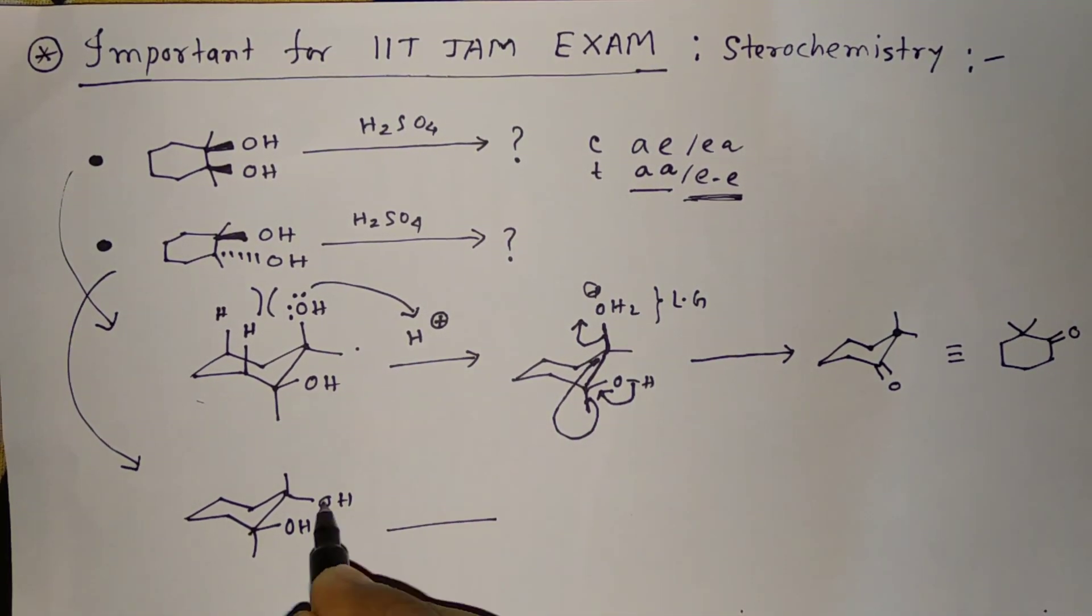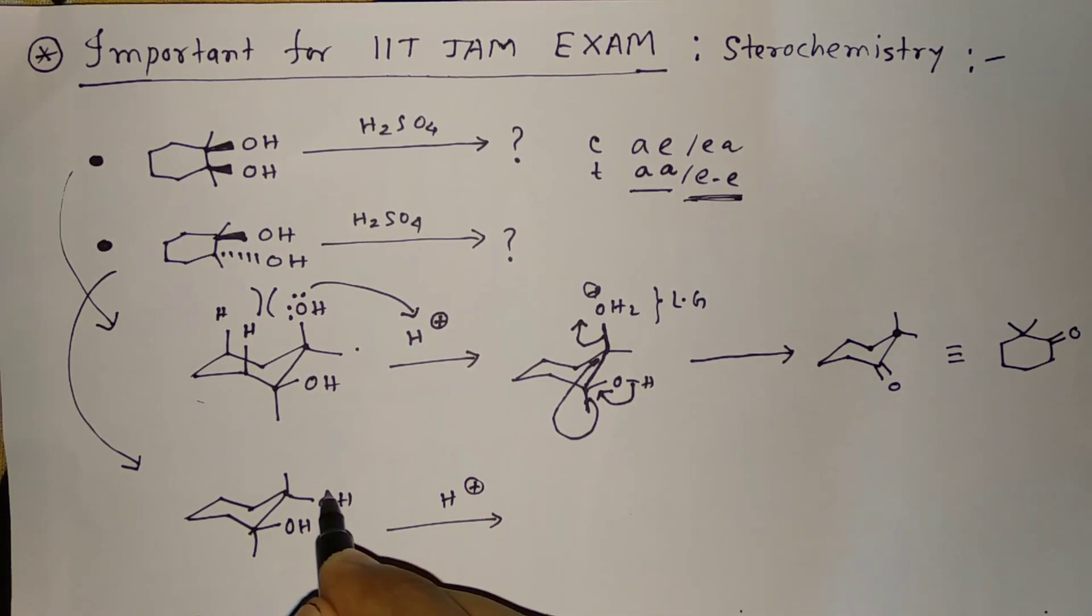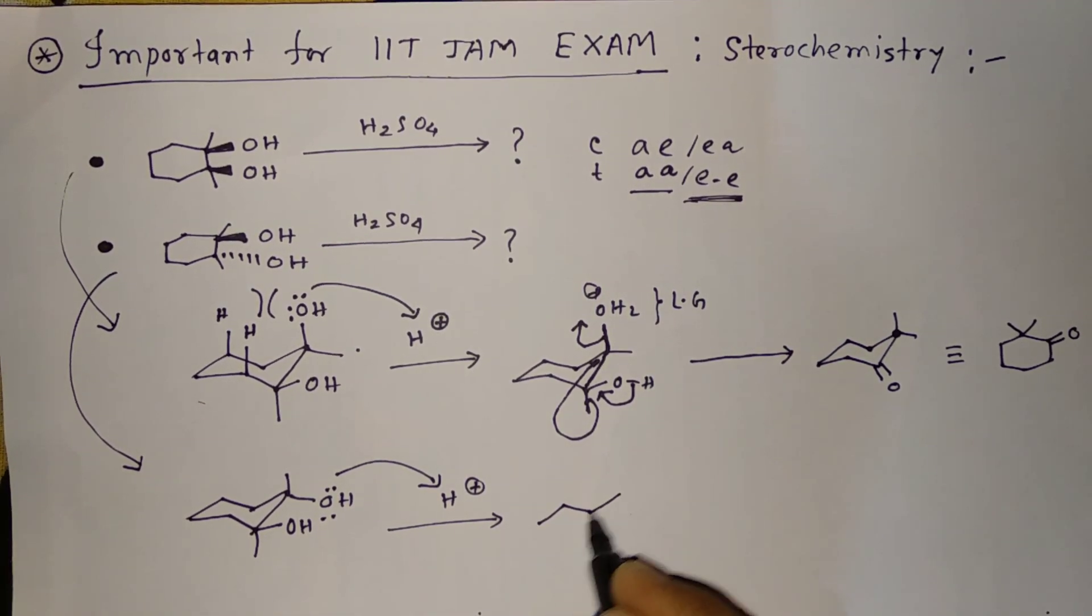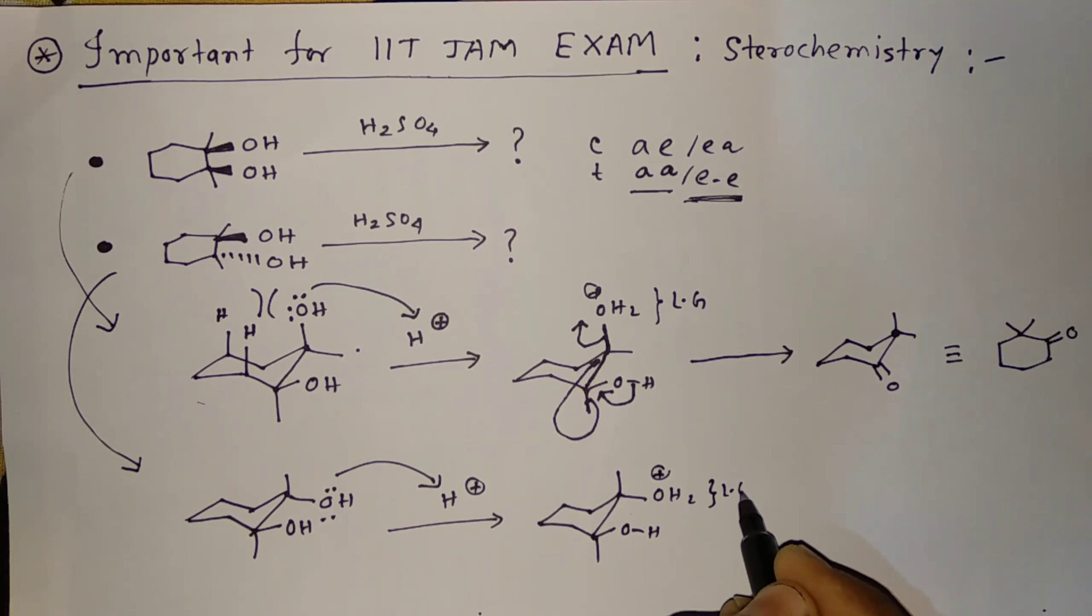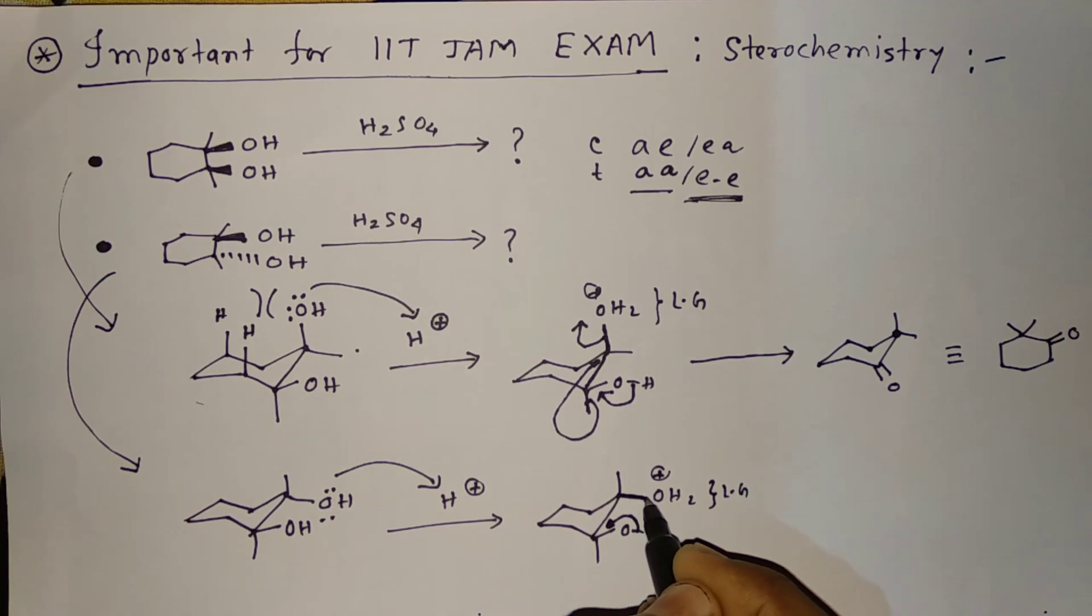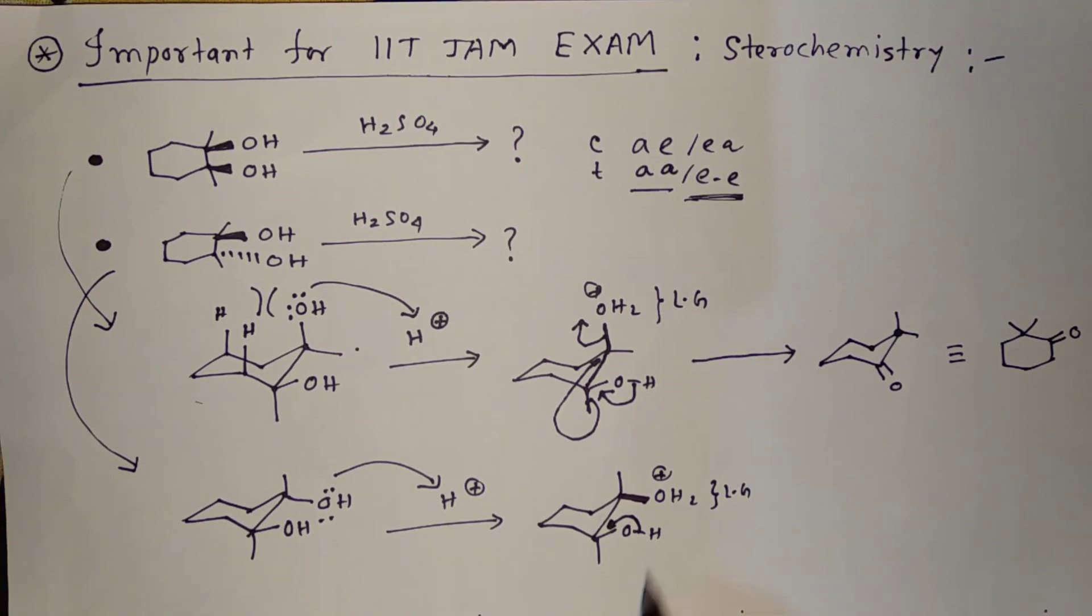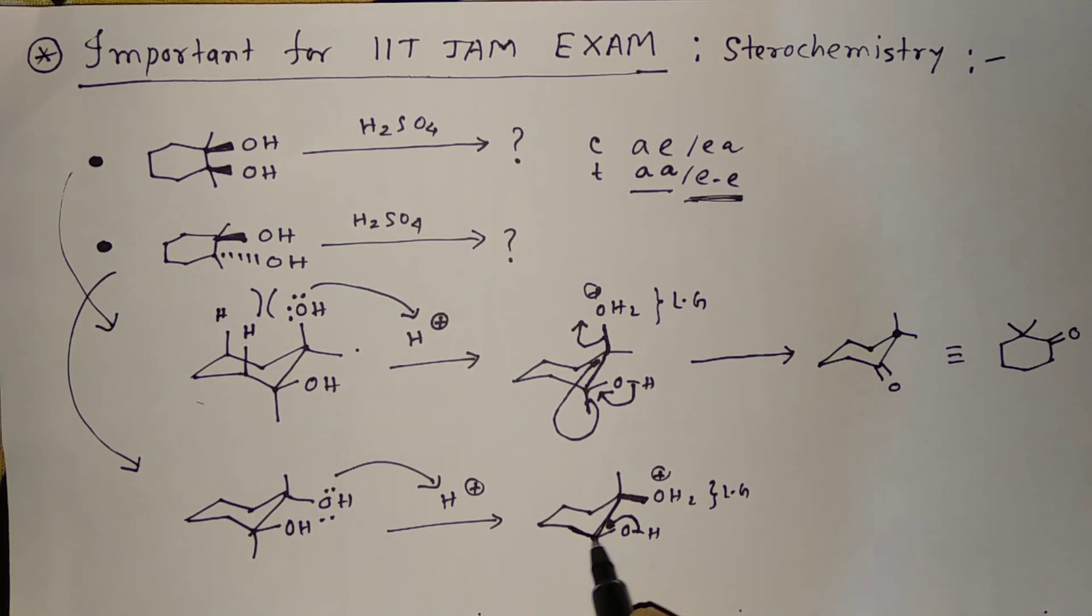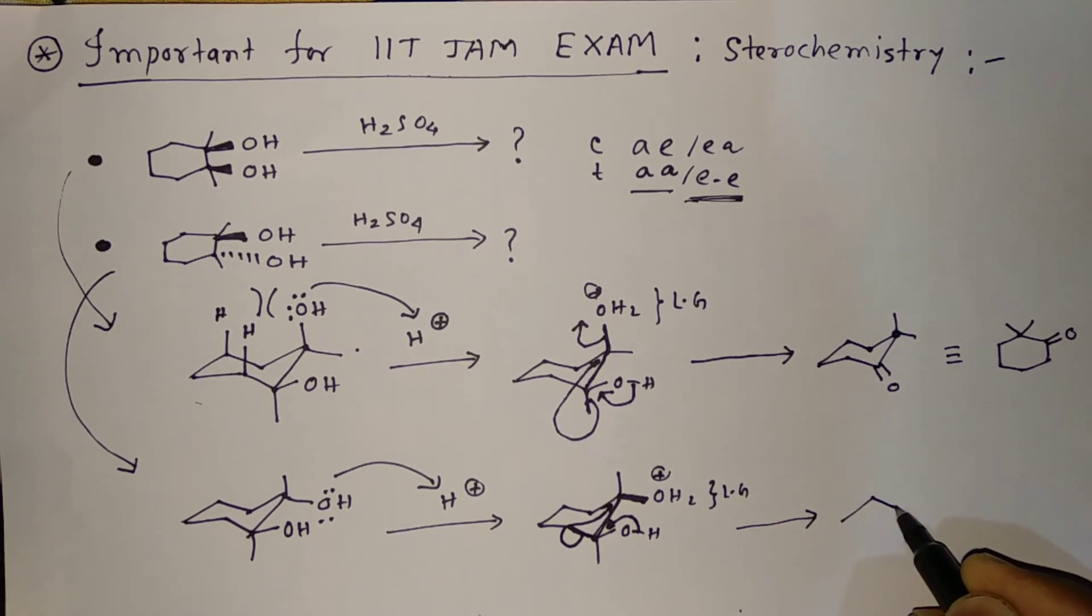If we give H⁺, then the system will be like this: OH here is OH₂⁺. This is a leaving group. Then this will first break the bond, then this bond will break. That is why I need to find the anti bond of this bond. So the anti bond will be like this. That is why ring bond migration will occur. So the final system will be like this.